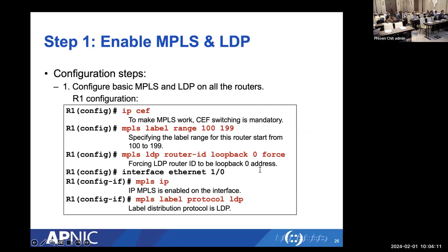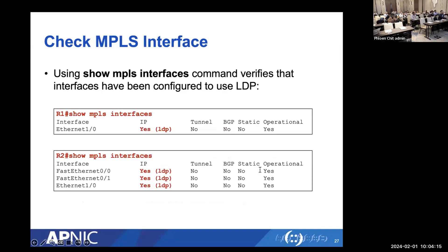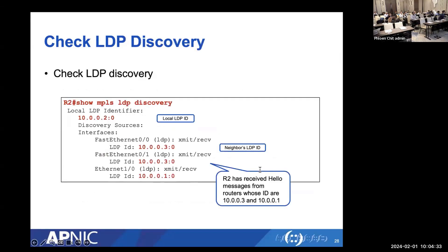After enabling MPLS and LDP, use 'show mpls interfaces' to verify which interfaces are configured to run LDP. To check LDP discovery status, use 'show mpls ldp discovery' — this shows the local router's LDP identifier and the LDP identifiers of remote peers from which it has received Hello messages, along with the interfaces where those Hellos were received.